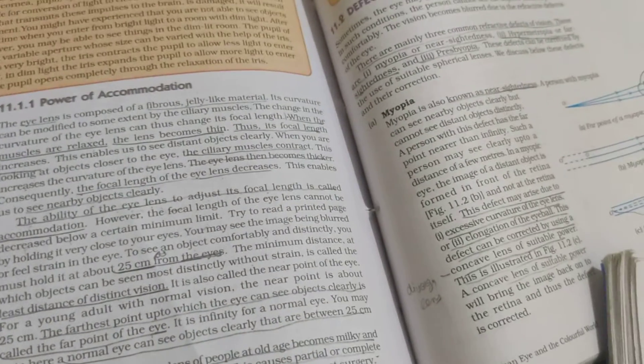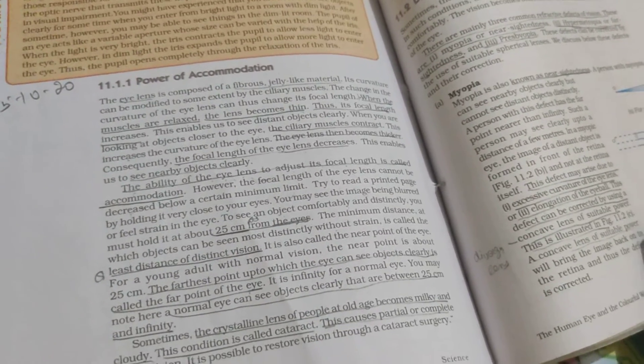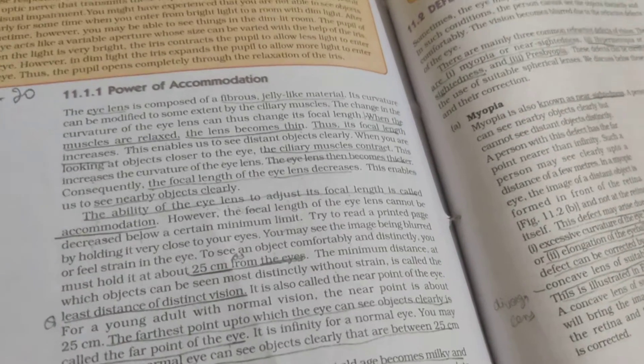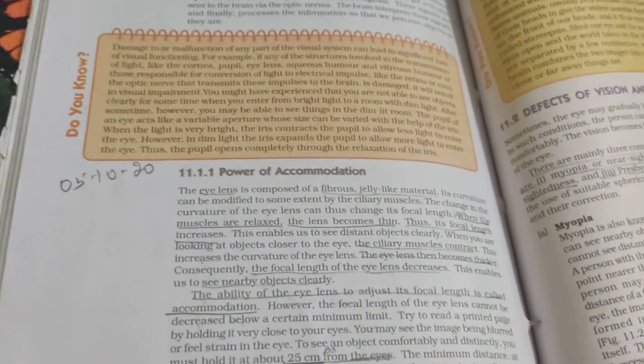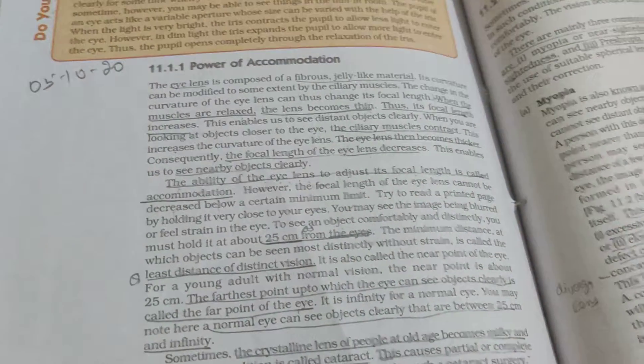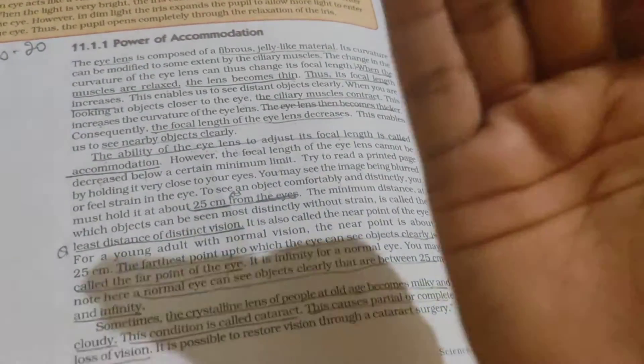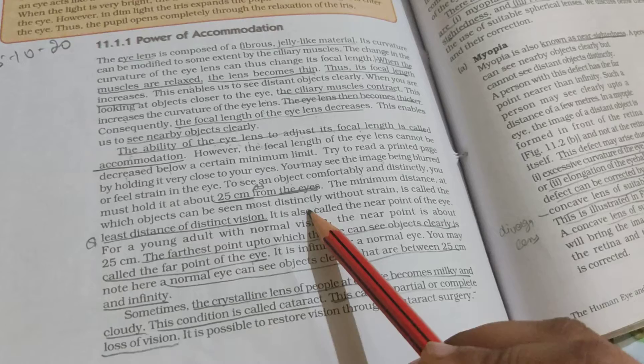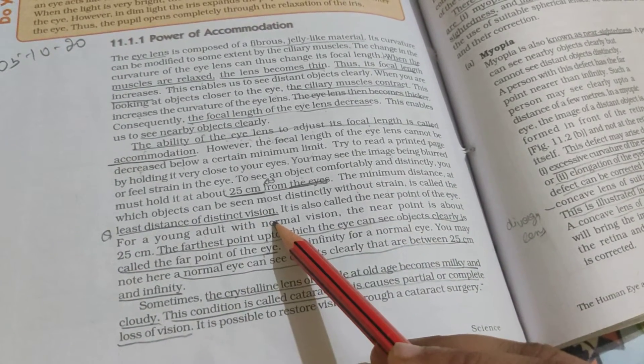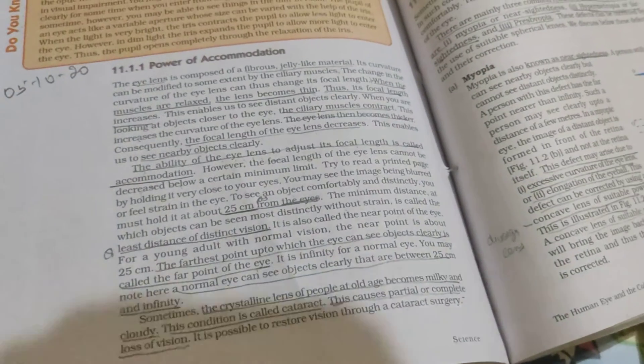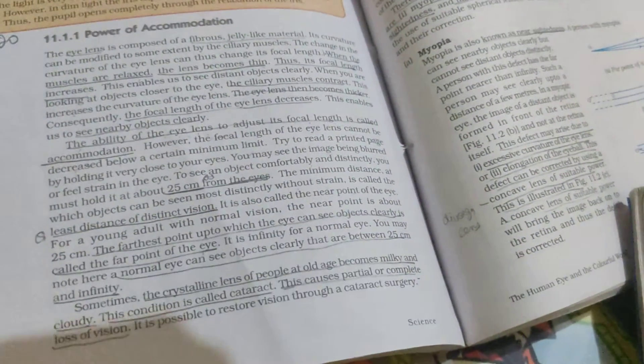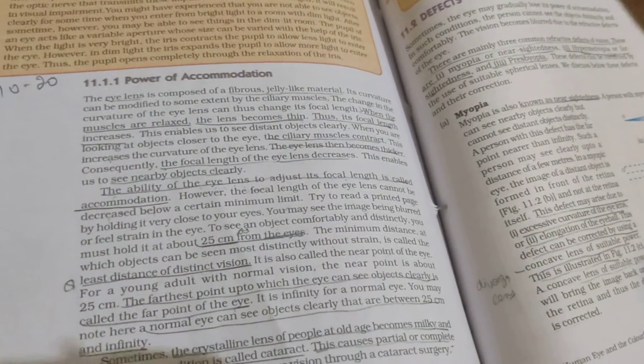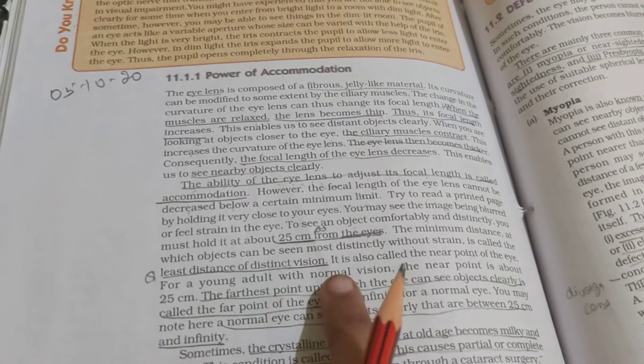A normal eye has a comfortable reading range. You can read at a certain distance - that distance is 25 cm from the eye. The minimum distance at which an object can be seen distinctly without strain is called the least distance of distinct vision.